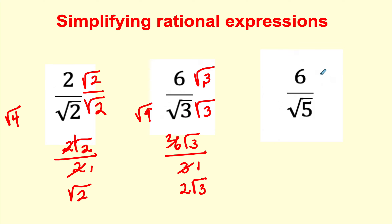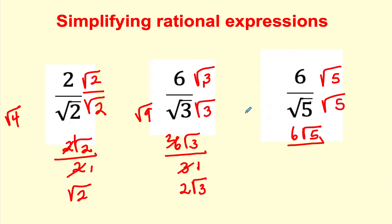Let's do it again. I'm going to multiply top and bottom by √5, and I'm going to have 6√5 in the numerator. √5 times √5 is √25. √25 is the number 5. We no longer have a root in the denominator. That's as simple as we can get it, and we're done with that one.